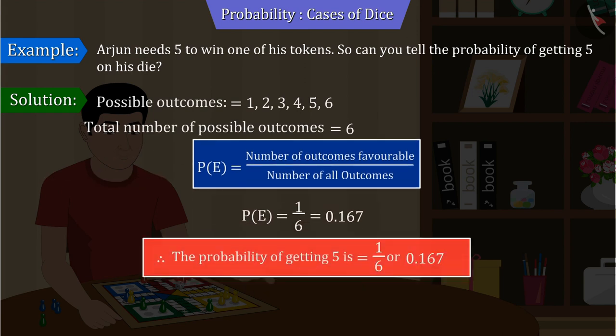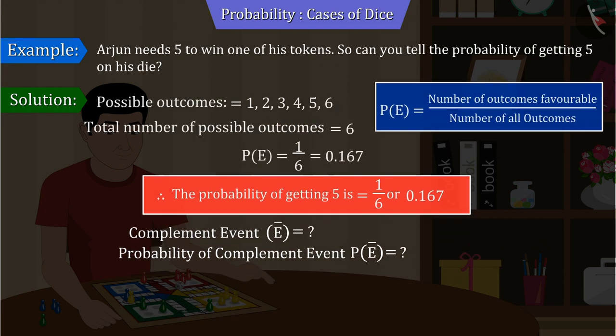Can you now tell me what would be the complement event for this? And what will be the probability of this complement event? Here, the complement event means not getting five when the dice is thrown. Hope you remember that we can find the probability of a complement event using this formula. By which the probability of not getting five and getting the numbers one, two, three, four or six is five by six.